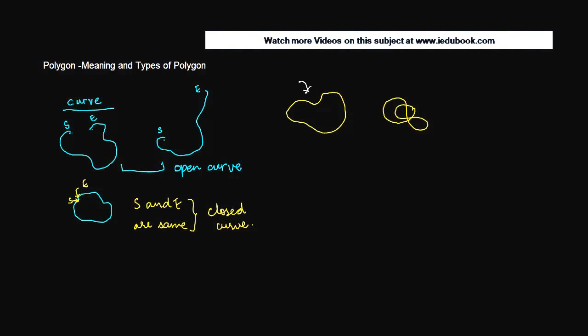So if you see this curve, there is no point where any part of curve intersect other. So in this curve, there is no part, no single part of the curve, which is intersecting the other part. Whereas if you notice here, there is a part where the curve intersects each other. Here it is intersecting, here it is intersecting.